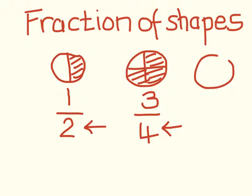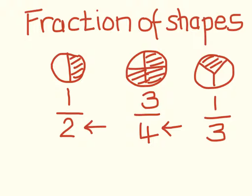If you then look at this, which has been split into three, that means the total number of parts are three. How much of it has been shaded? In this case, one out of the three have been shaded.